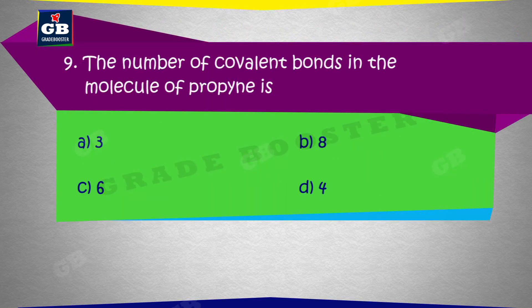The number of covalent bonds in the molecule of propyne — propyne ke molecule mein covalent bonds ki sankhya hai: a) 3, b) 8, c) 6, d) 4.